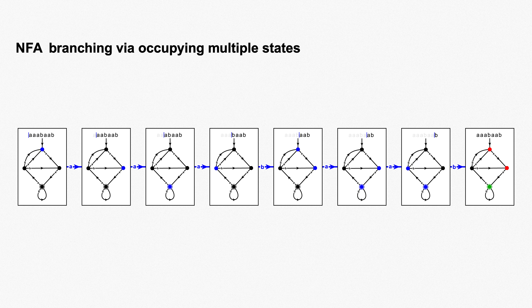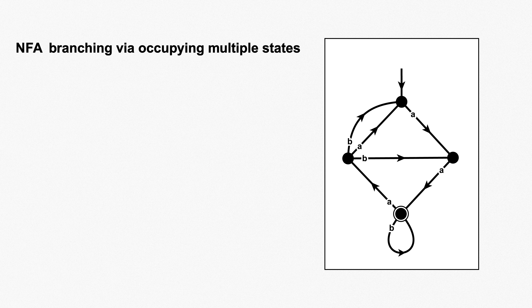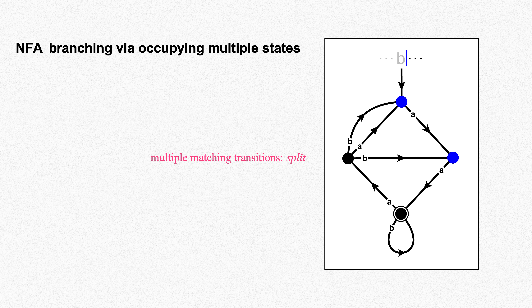With this done, we see at each step a set of states from our NFA occupied. Each state occupied corresponds to one branch of the computation, but we see them all at once on the diagram. The concept is the same, just with a simpler picture. For each symbol of our input string, we move all occupied states according to all of the corresponding transitions. If there are multiple transitions from a given state on a given symbol, we have a new picture of branching: a single occupied state splitting to occupy multiple states. If there are no transitions from a given state on a given symbol, the corresponding branch dies, no longer occupying that state.